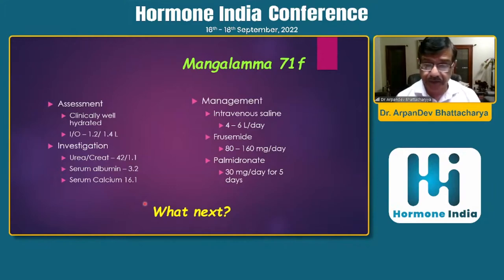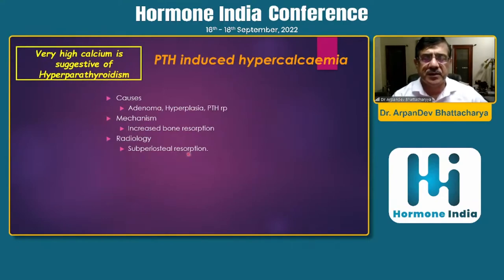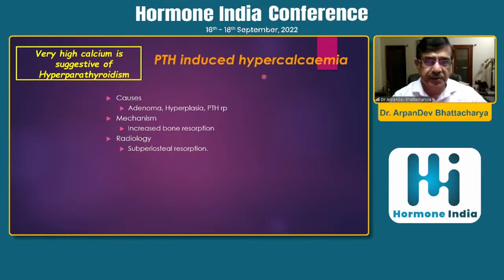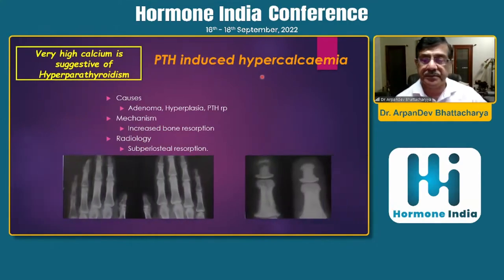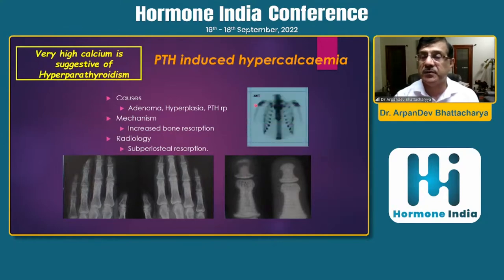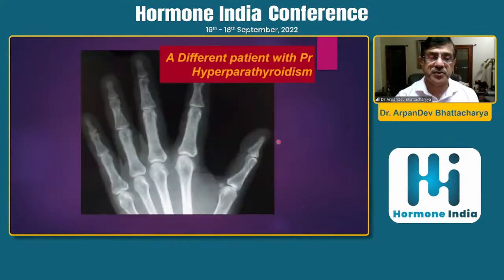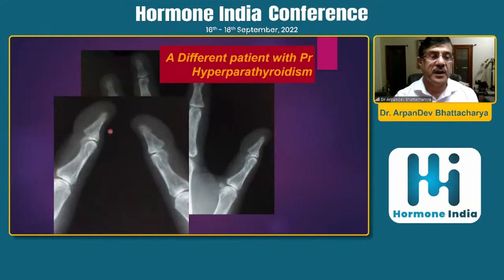What next? We are treating the hypercalcemia, but we need to find the cause. Very high calcium — as I mentioned — is suggestive of hyperparathyroidism, with increased bone resorption and subperiosteal resorption on X-ray. The commonest PTH-induced hypercalcemia is hyperparathyroidism. On skeletal survey X-rays you can see juxta-periosteal osteoresorption, osteoporosis, juxta-articular changes, and tuft resorption. On bone scan, you can see active hot areas.